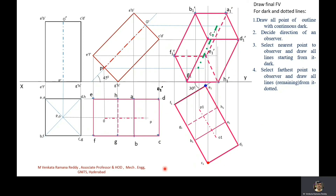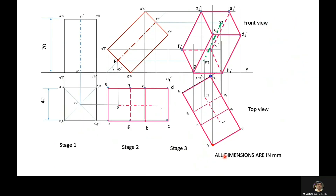This is the final top view. The final front view satisfies the given conditions: the square prism's axis makes 45 degrees to HP, it rests on its base side GH on HP so that G' and H' fall on the XY line. The height of the square prism is 70 mm and the base side length is 40 mm, all dimensions in millimeters. Stage 1 is the simple position, stage 2 is the axis inclination, and stage 3 is the base side inclination showing the final front and top views.